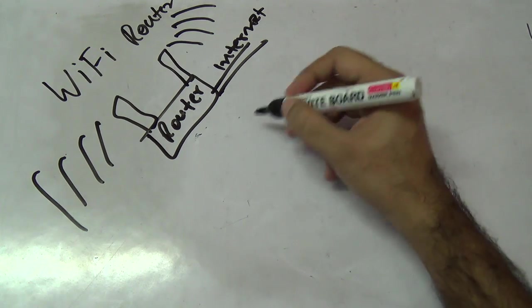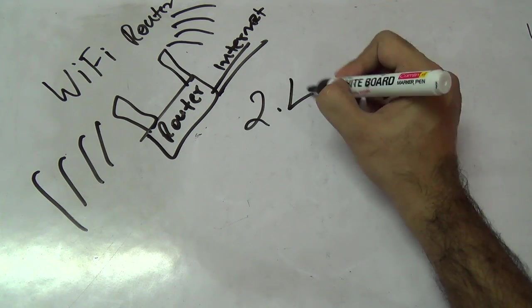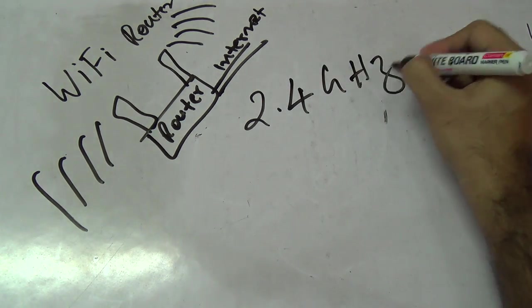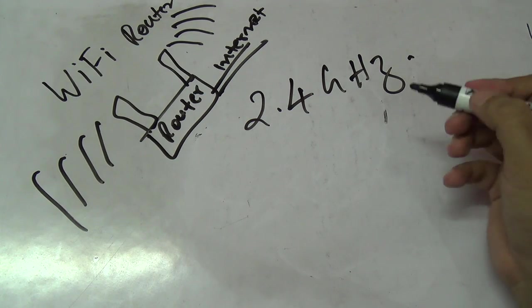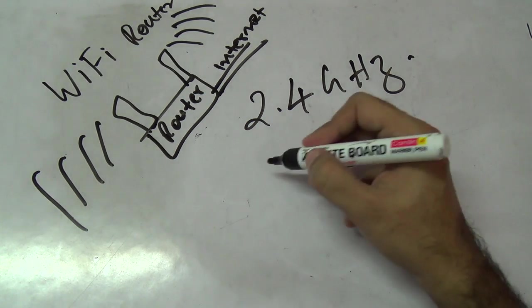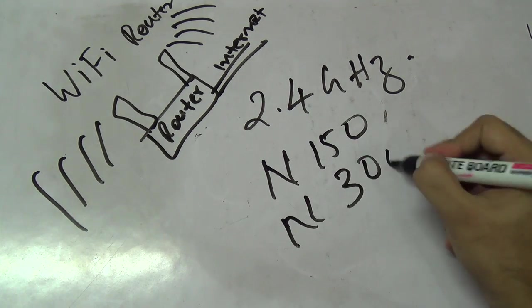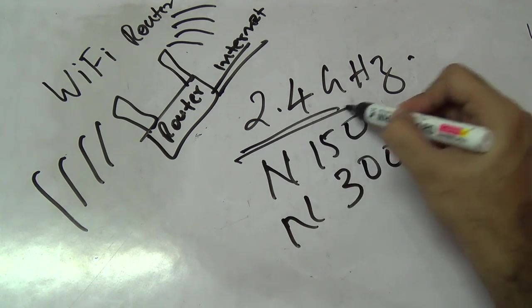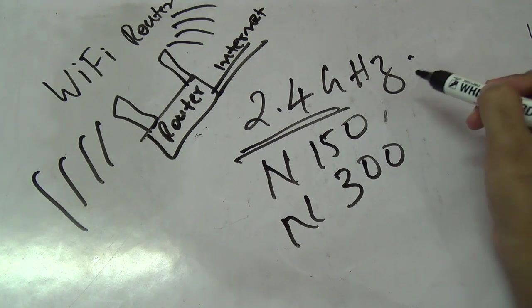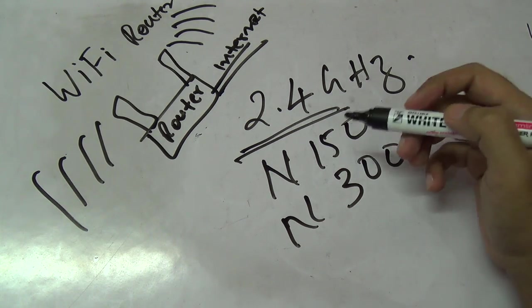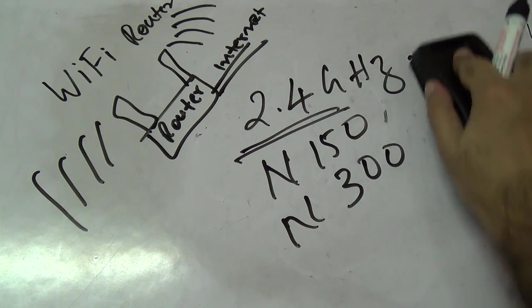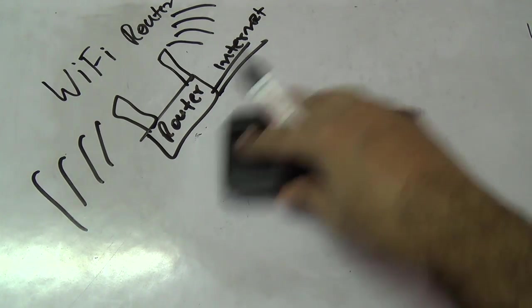Now you might ask, what are these wireless signals? These are actually radio waves and we have them in two frequencies. One is the 2.4 gigahertz, this is the most common. If your router doesn't specify, for example the most common ones we find these days, the n150 or n300, they are running on 2.4 gigahertz.